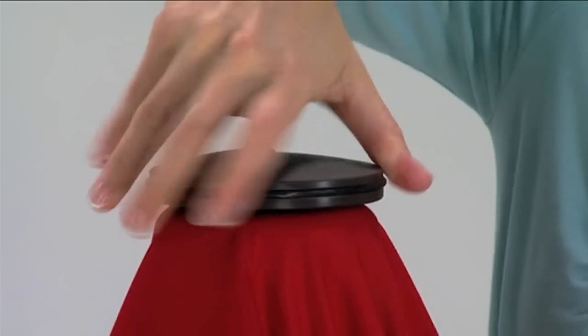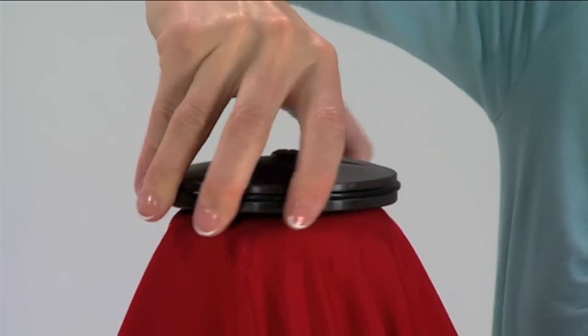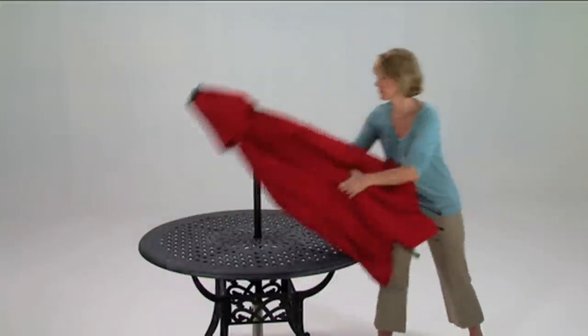The grommet is typically a brass colored eyelet located at the top of the umbrella, which allows the decorative finial to pass through.